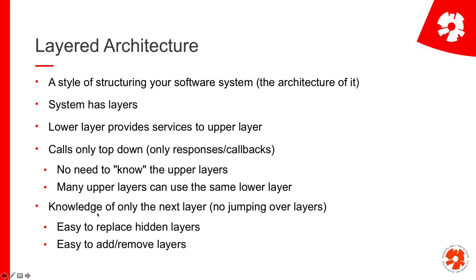The next important thing is that a layer only knows the next one. So if you have three or four layers, the first one only knows the second — it doesn't know anything about the third or fourth. That makes it easier to replace layers that are somewhere in the middle, and it makes it easier to add and remove layers.